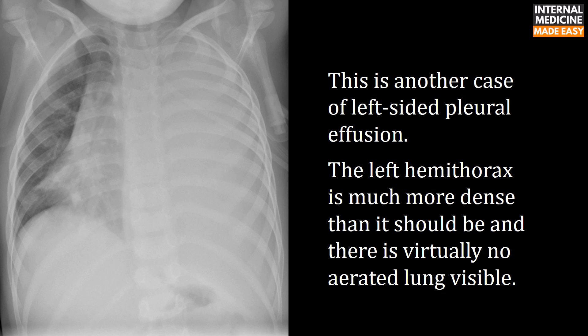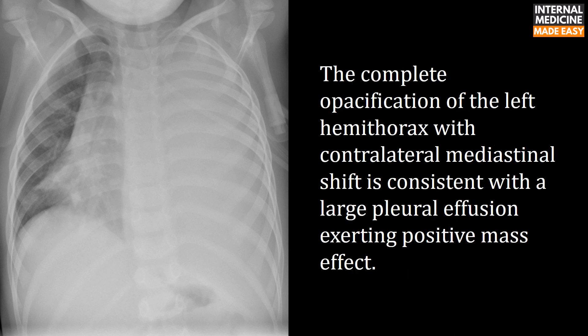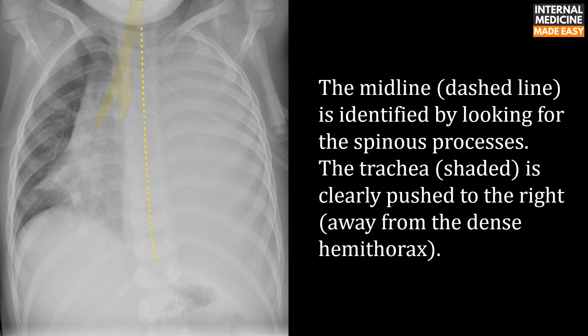This is another case of left-sided pleural effusion. The left hemithorax is much more dense than it should be, and there is virtually no aerated lung visible. The complete opacification of the left hemithorax with contralateral mediastinal shift is consistent with a large pleural effusion exerting positive mass effect. The midline is identified by looking for spinous processes; the trachea is clearly pushed to the right, away from the dense hemithorax.